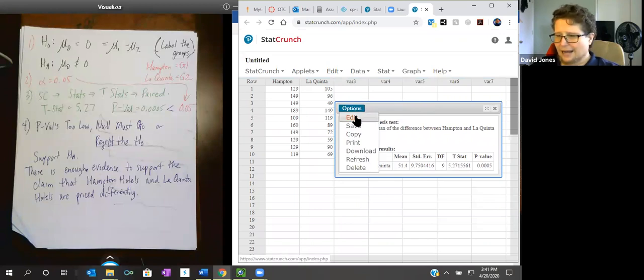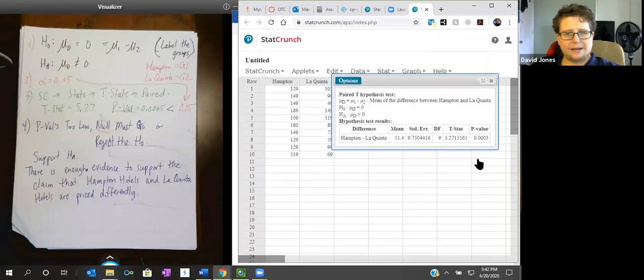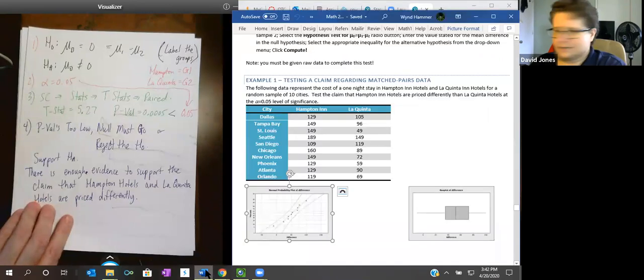Notice it didn't say which one was higher because we didn't say greater than. We can look at it a little bit though. Hampton, every single one has three digits. La Quinta, most are smaller. I'm willing to say that we could have done this test and said Hampton was priced higher than La Quinta. If we did that, I have Hampton in team one. I would change this to be greater than. And our p-value is still below. So we have sufficient evidence to support that Hampton hotels are more expensive to stay at than La Quinta hotels.